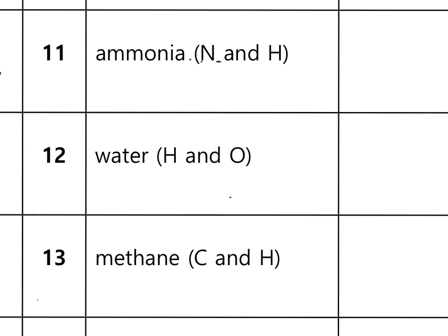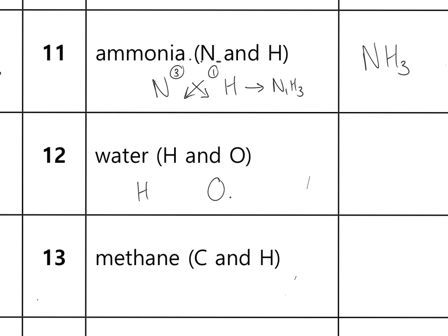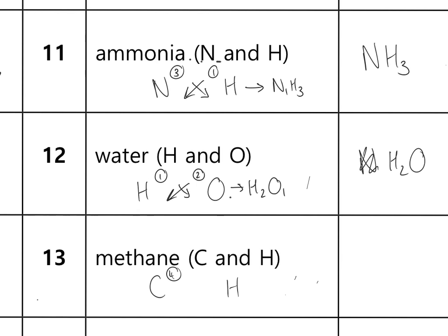To complete the examples on page eight: ammonia is nitrogen and hydrogen — nitrogen in group five has valency three, hydrogen has valency one. Swap and drop gives N¹H₃; ignoring the one gives NH₃. Water: hydrogen valency one, oxygen valency two — swap and drop gives H₂O¹; ignoring the one gives H₂O. Methane: carbon in group four has valency four, hydrogen has valency one — swap and drop gives C¹H₄; ignoring the one gives CH₄.